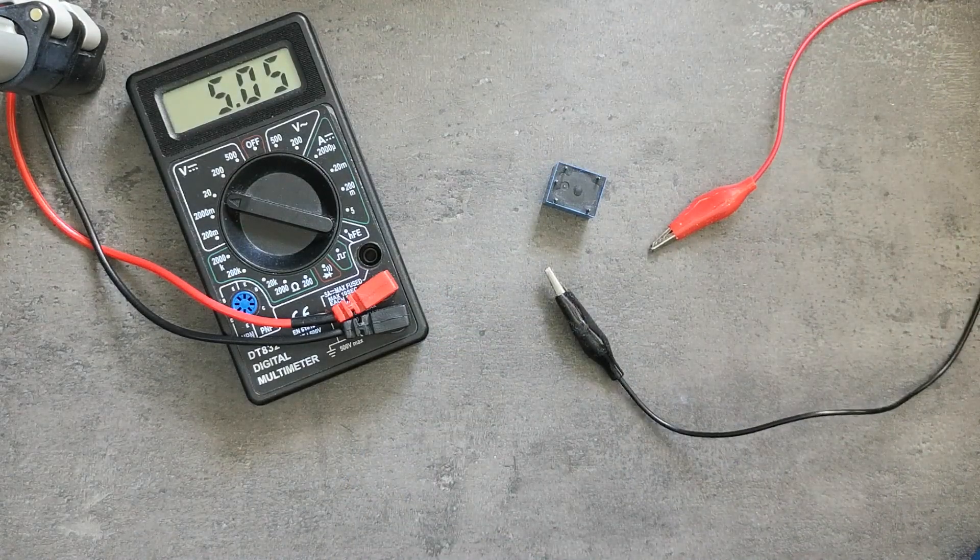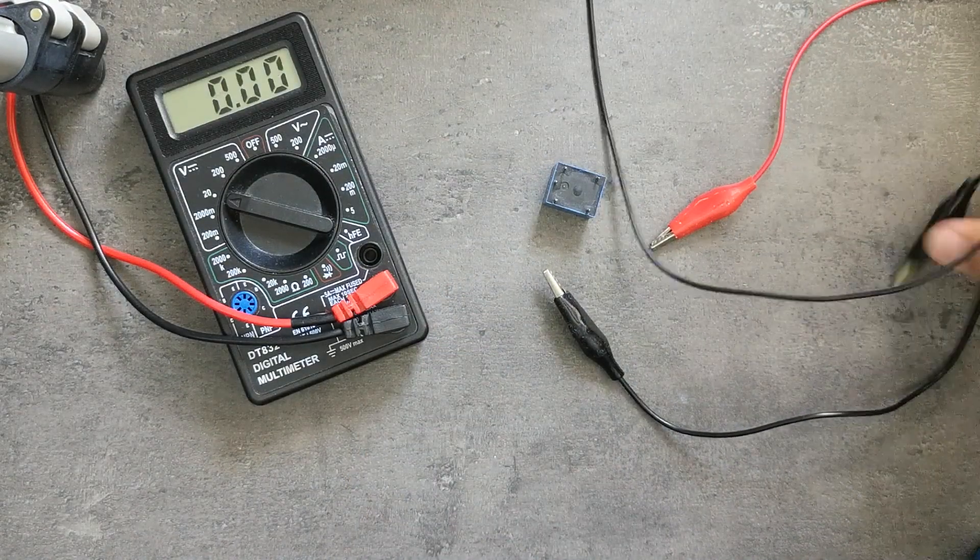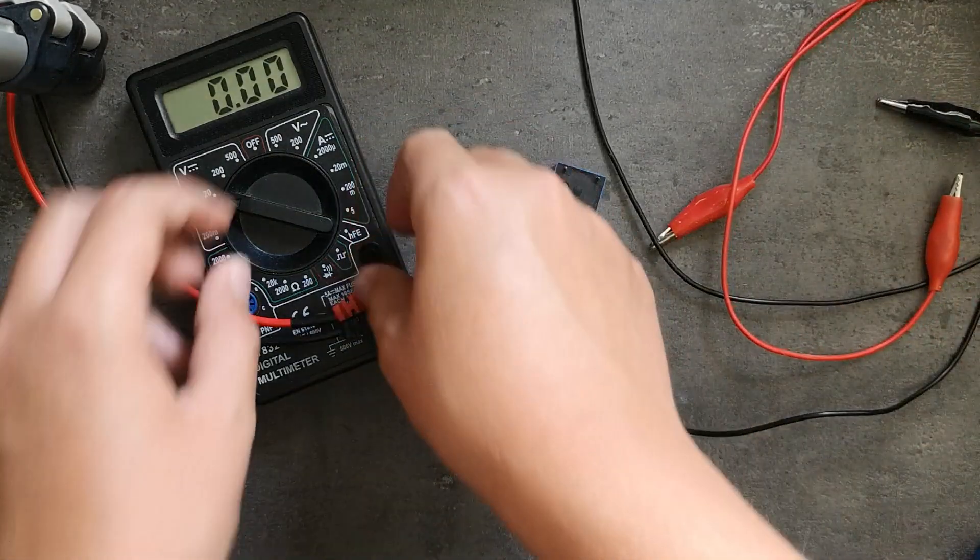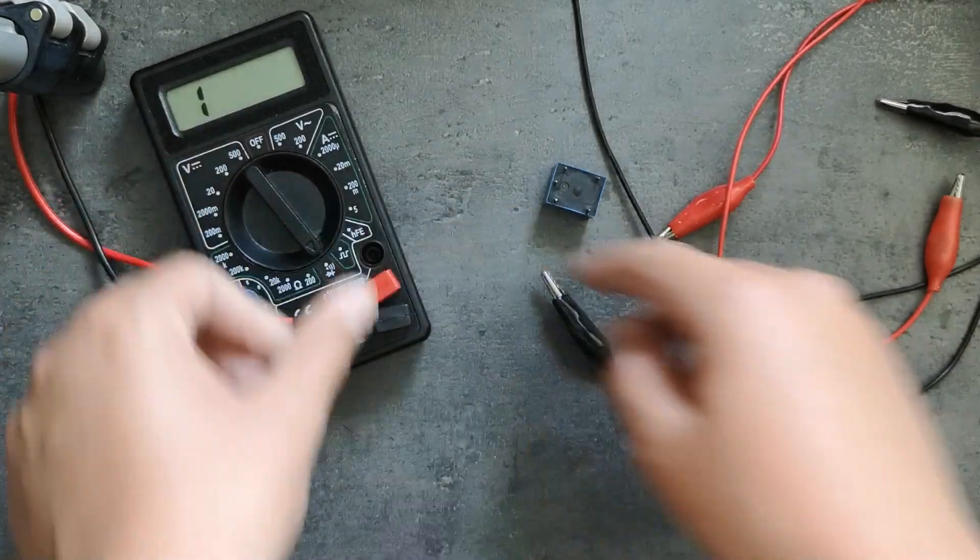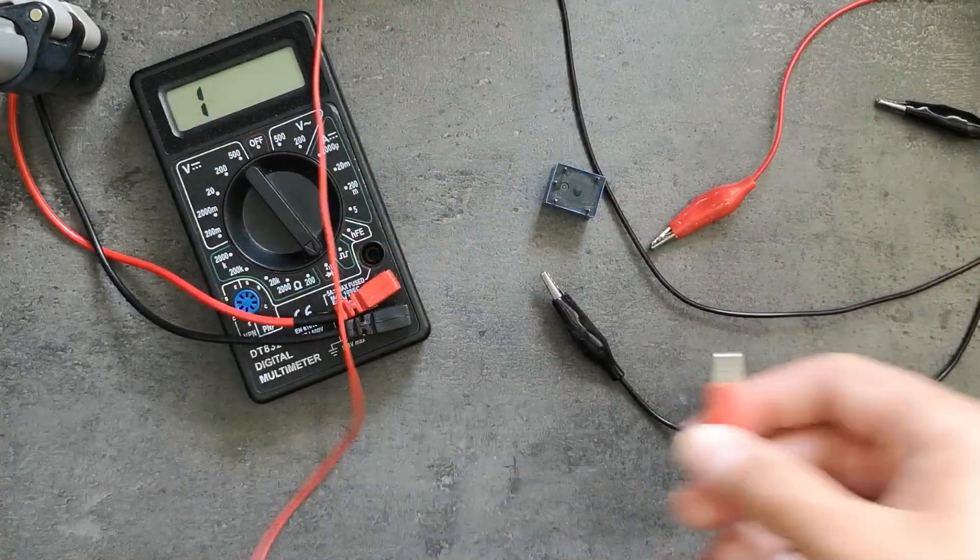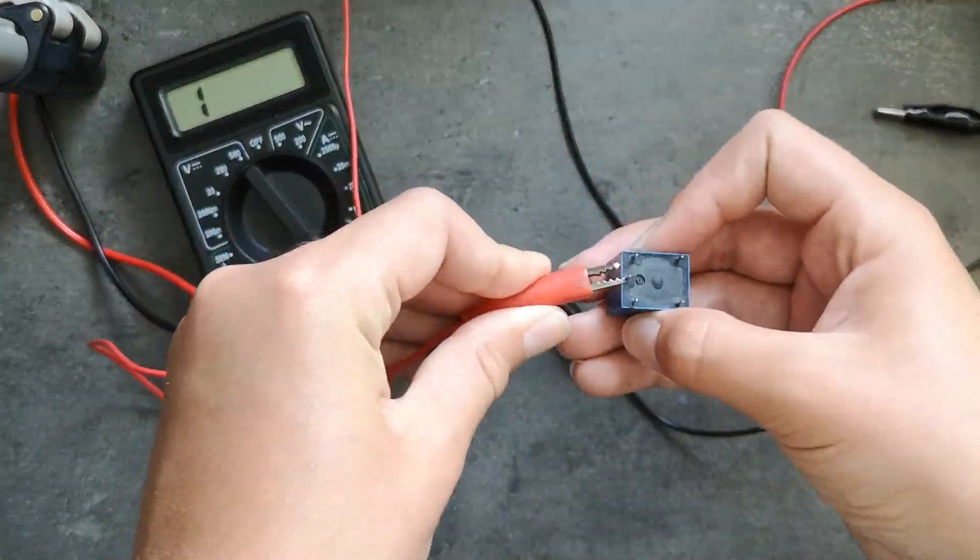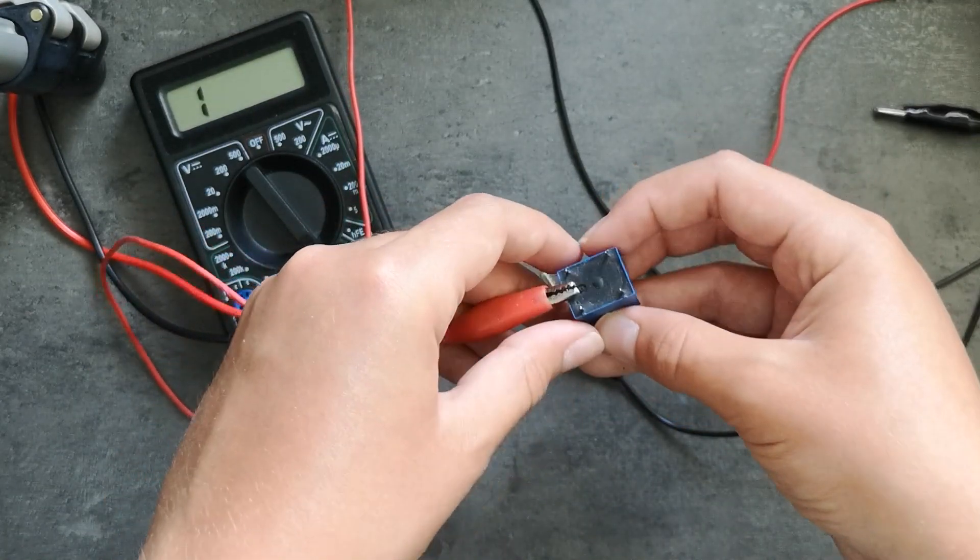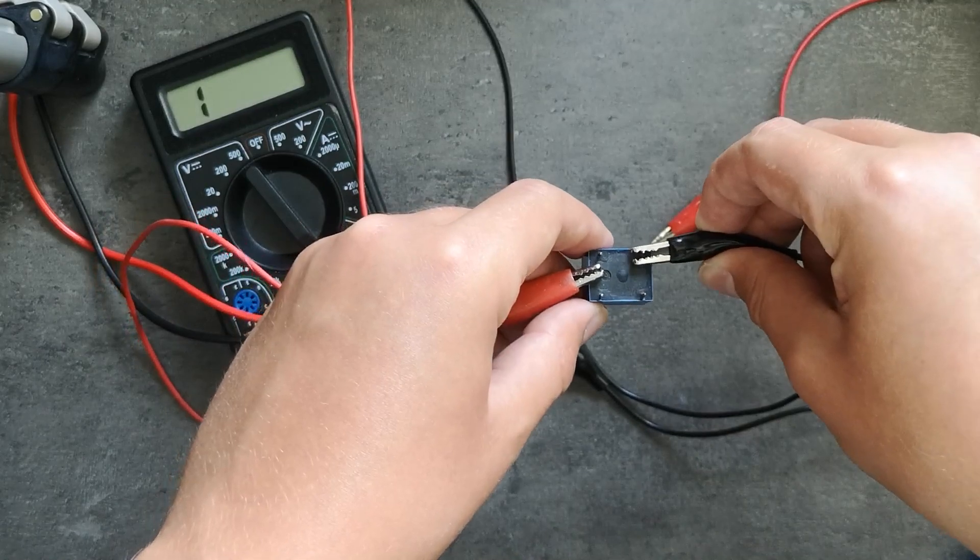So just to show you how that really works we can now hook up the alligator clips from the multimeter and turn it into beep mode where we hook up the first one here. So like that. And the second one here.